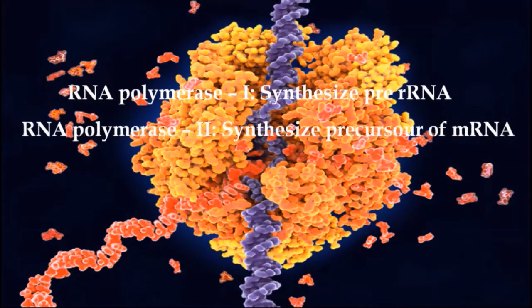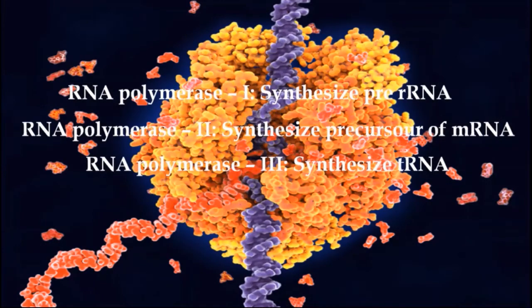RNA polymerase 2 synthesizes precursors of mRNAs and most of the snRNA and microRNA. RNA polymerase 3 synthesizes tRNA.